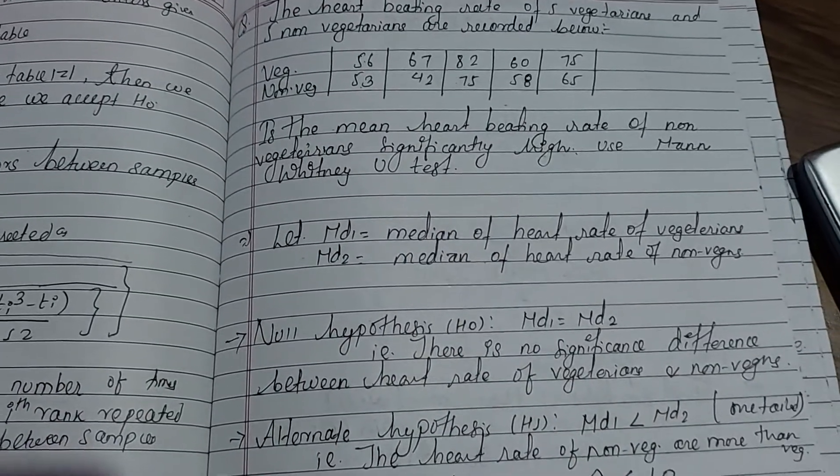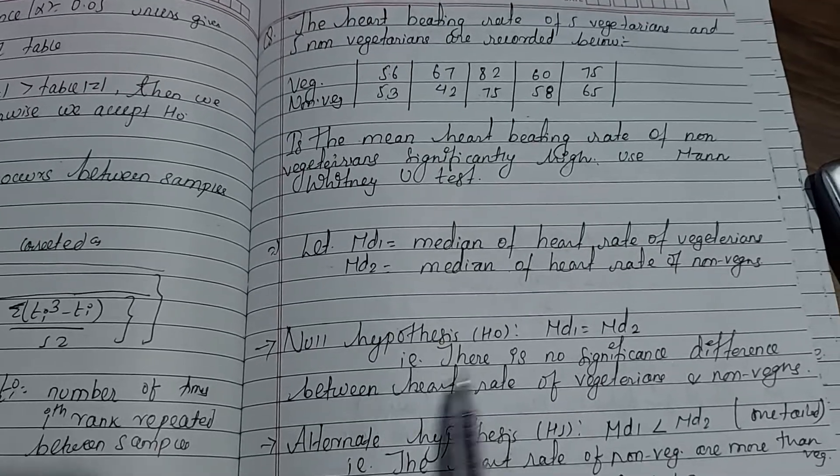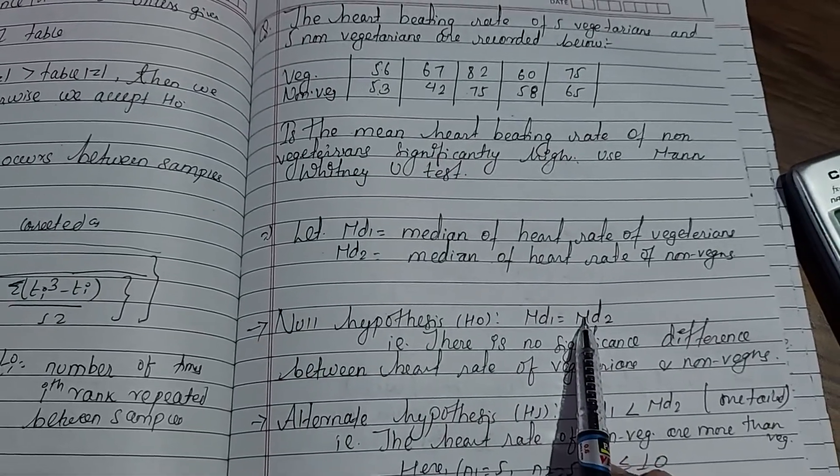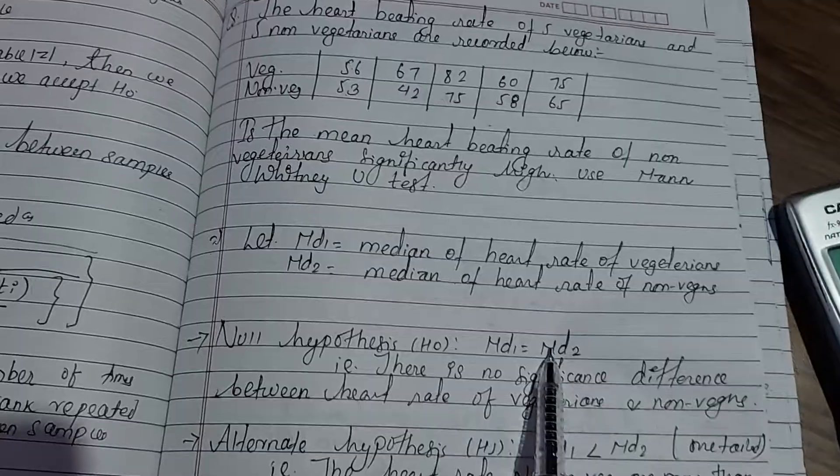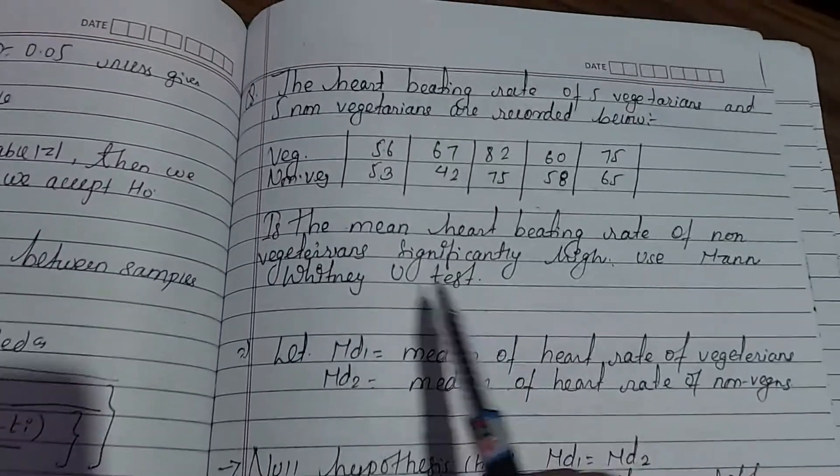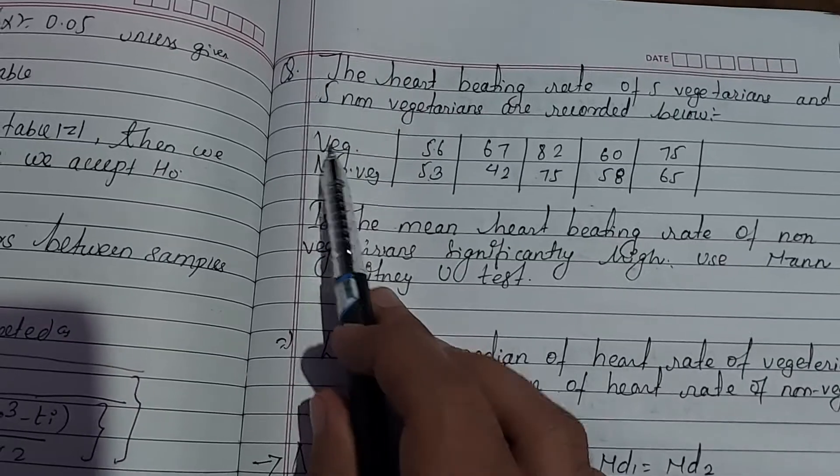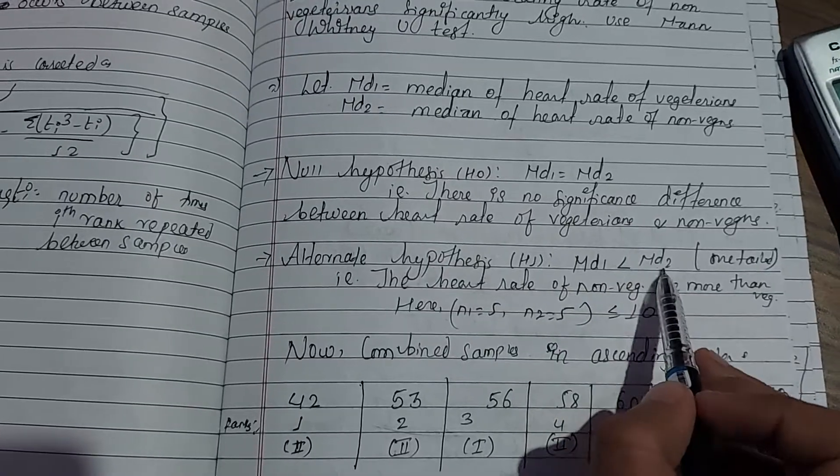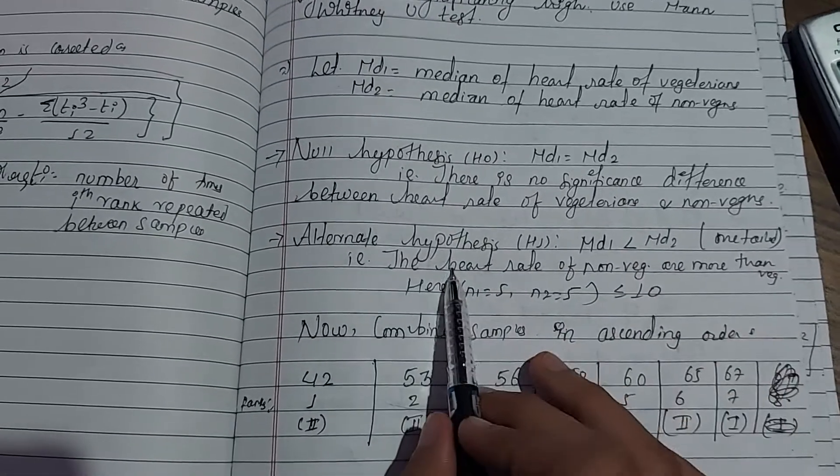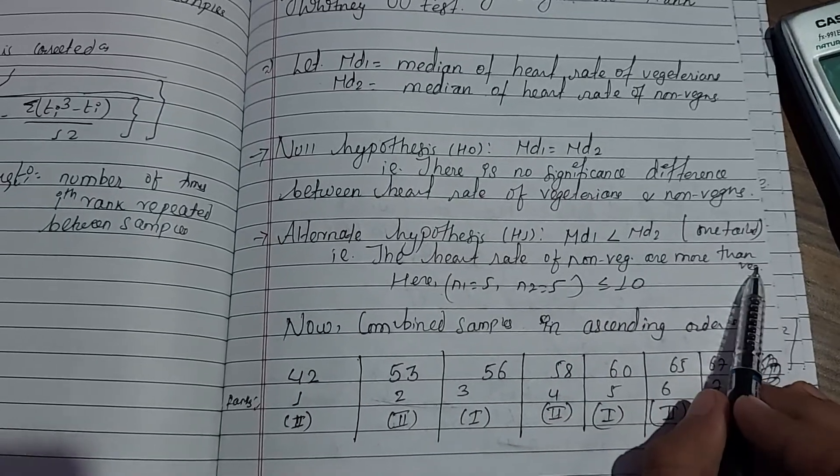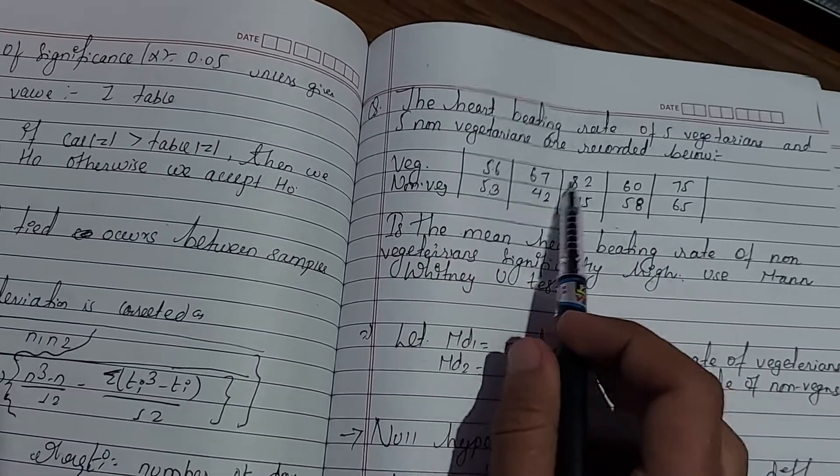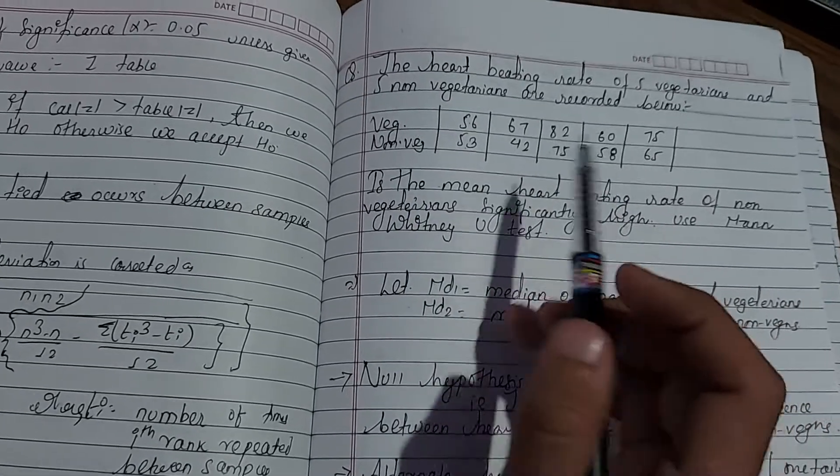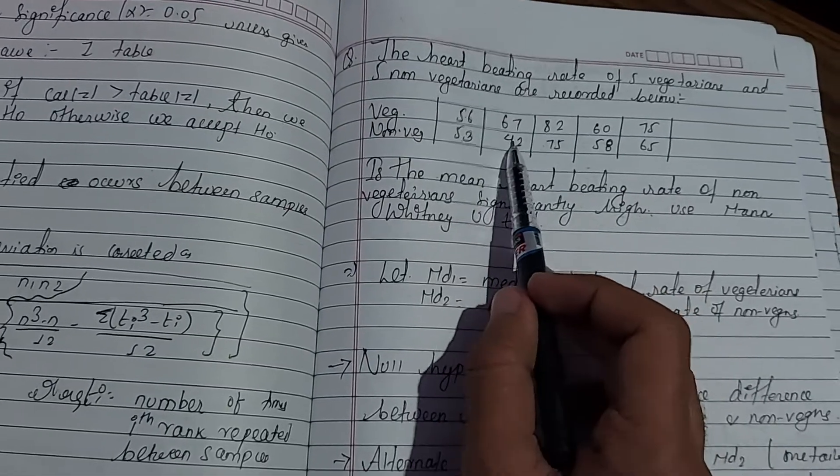The null hypothesis H0 is: There is no significant difference between heart rate of vegetarian and non-vegetarian, meaning the medians are equal. The alternate hypothesis H1 is: The heart rate of non-vegetarian is more than vegetarian, so Md1 is greater than Md2.